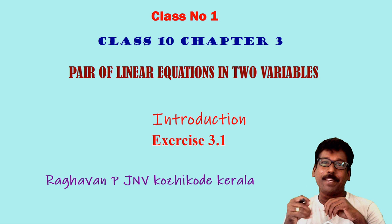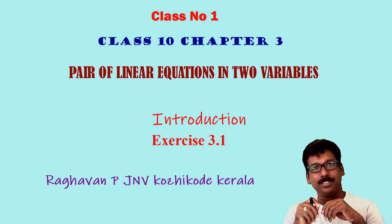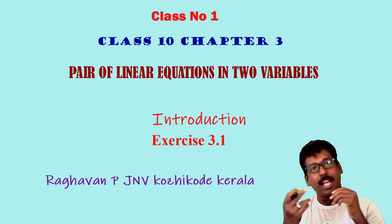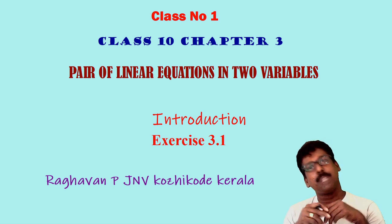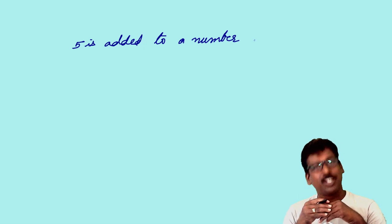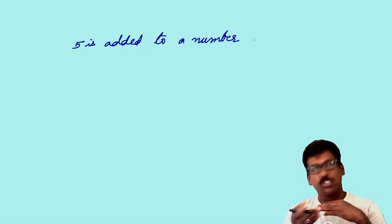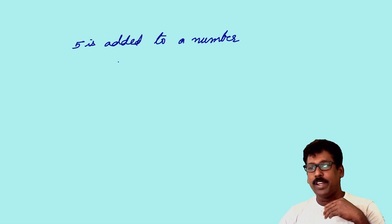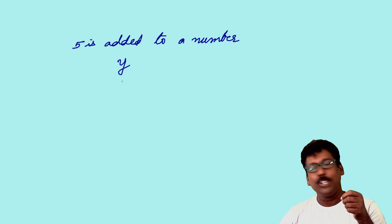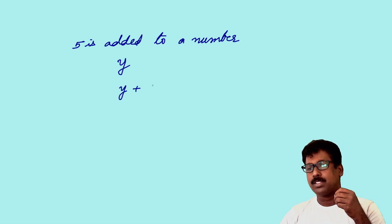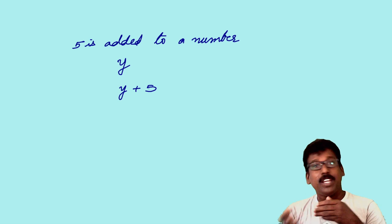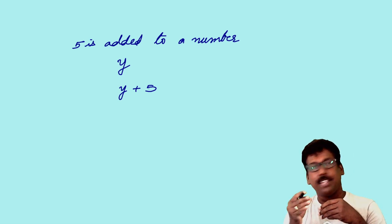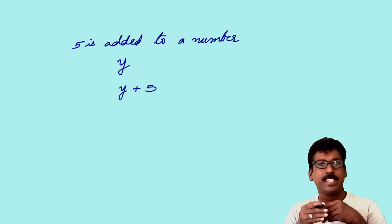Hi everyone, welcome to my first class on chapter number three: Pair of Linear Equations in Two Variables. In this class I am going to give an introduction to this chapter and exercise 3.1. Consider the statement: '5 is added to a number.' How will you express this statement mathematically? You don't know the number, so let me take the number as y. Then you can write this as y plus 5 — this is an algebraic expression and the variable used here is y.